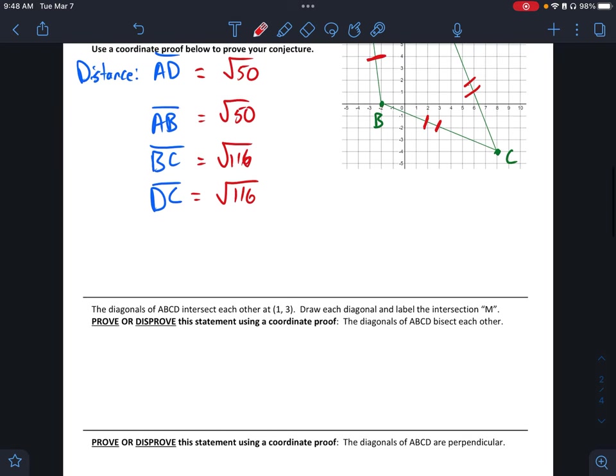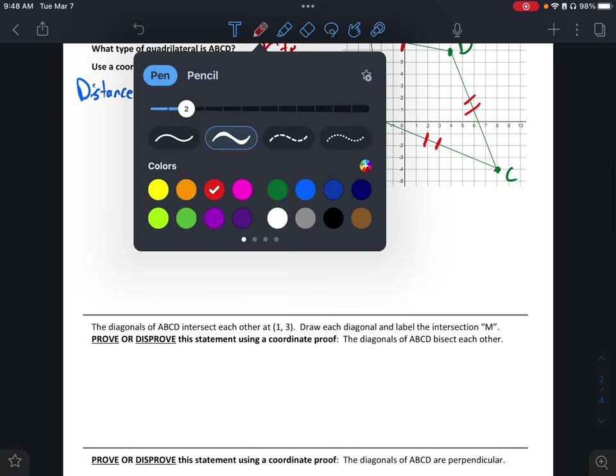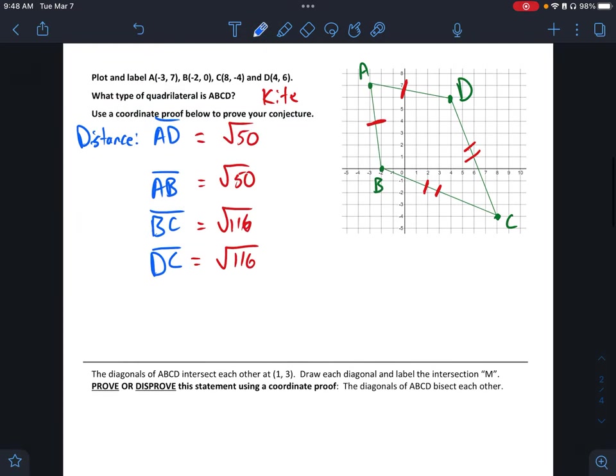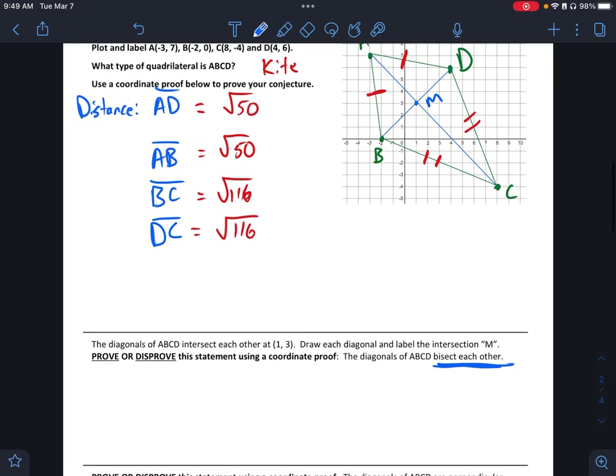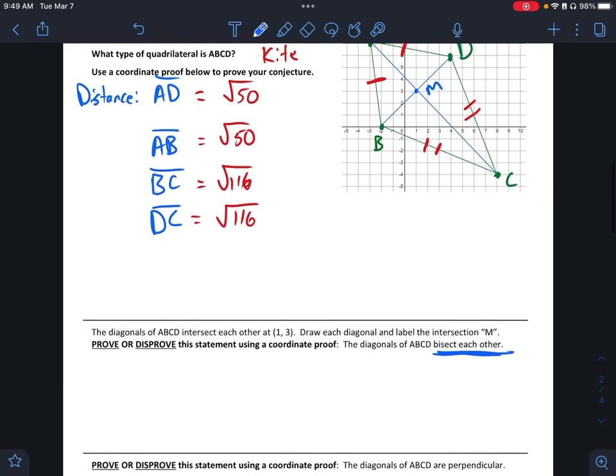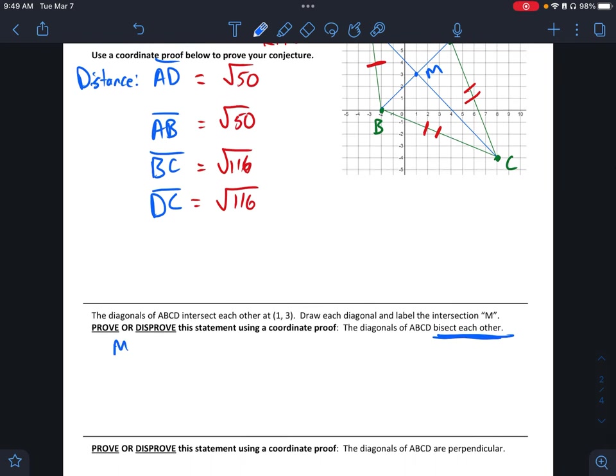So then it says, well, let's look at the diagonals. If I look at my diagonals here, I should have a midpoint of 1, 3. So that is point M. And so I am seeing if these diagonals bisect each other. So I could find the distance of B, M, M, D, A, M, M, C, or I can look at the midpoint.